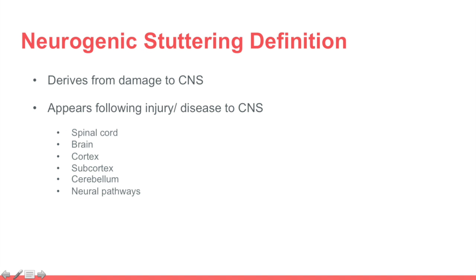Neurogenic stuttering derives from damage to the central nervous system. It can appear following an injury or disease to the central nervous system in any of these areas: the spinal cord, the brain, the cortex, subcortex, cerebellum, and neural pathways. The most common occurrence is with a stroke or traumatic brain injury. There is also a lot of research being done on neurogenic stuttering, so the information is constantly being updated and changing.